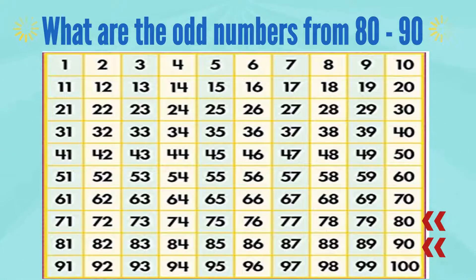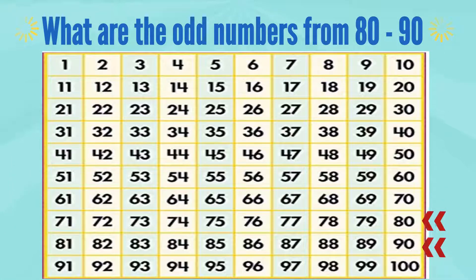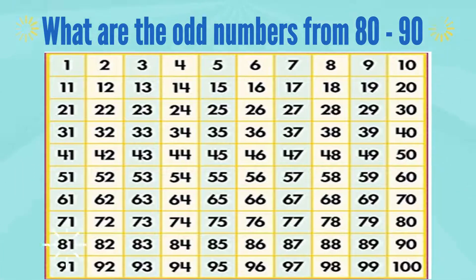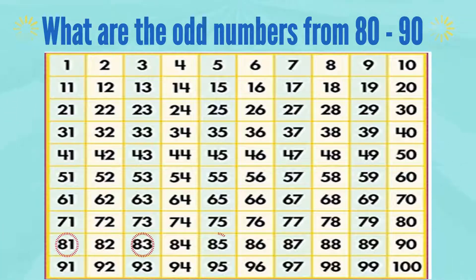What are the odd numbers from 80 to 90? 81, 83, 85, 87, and 89.